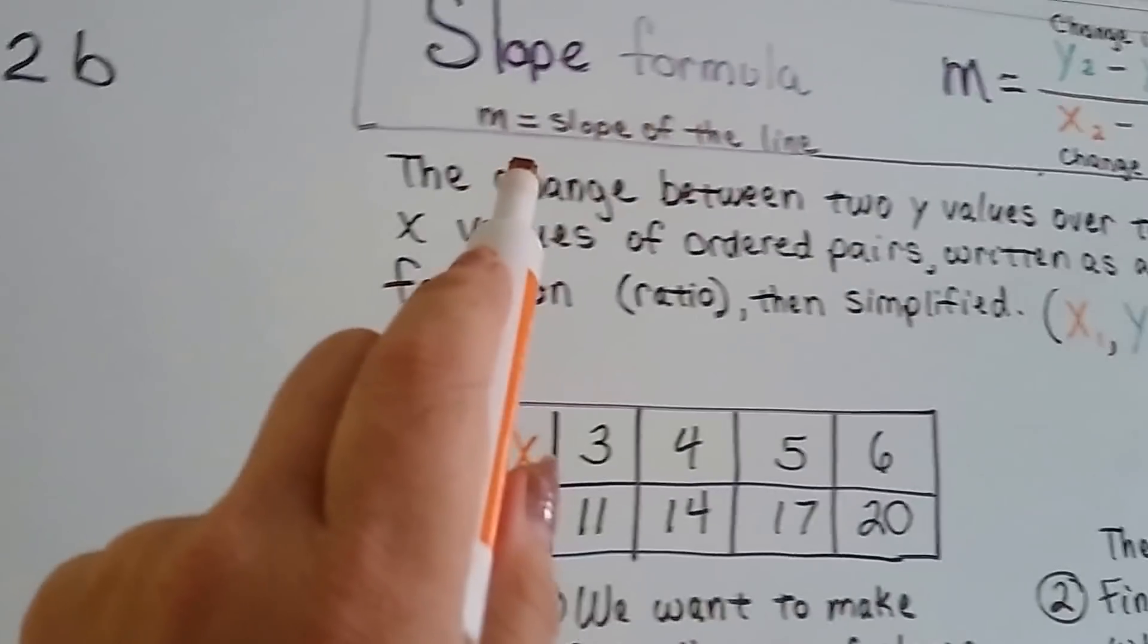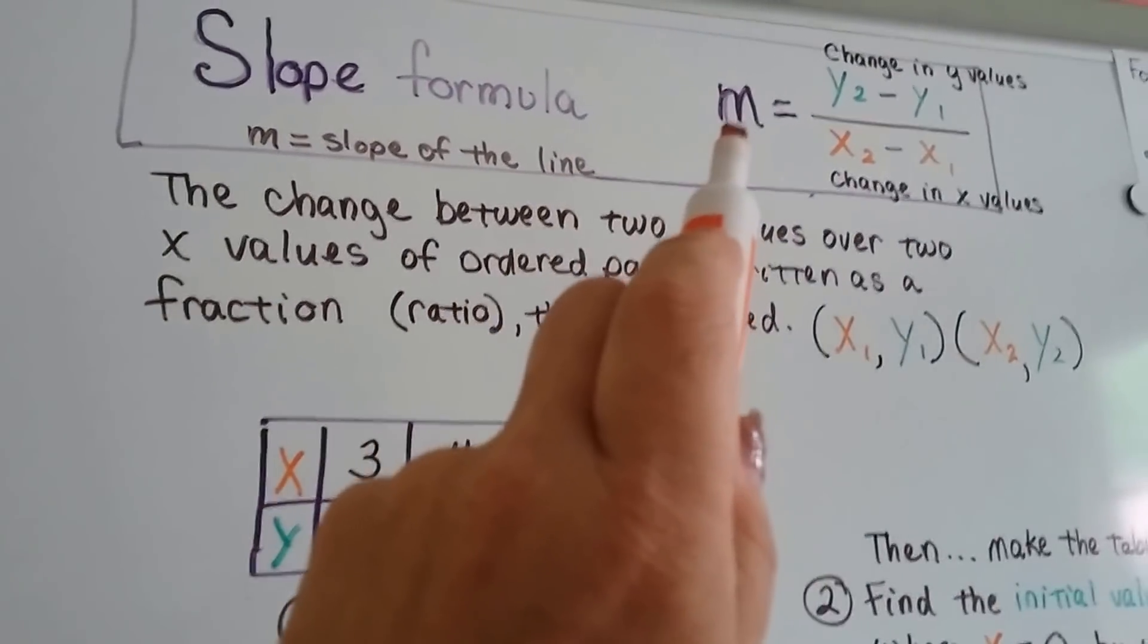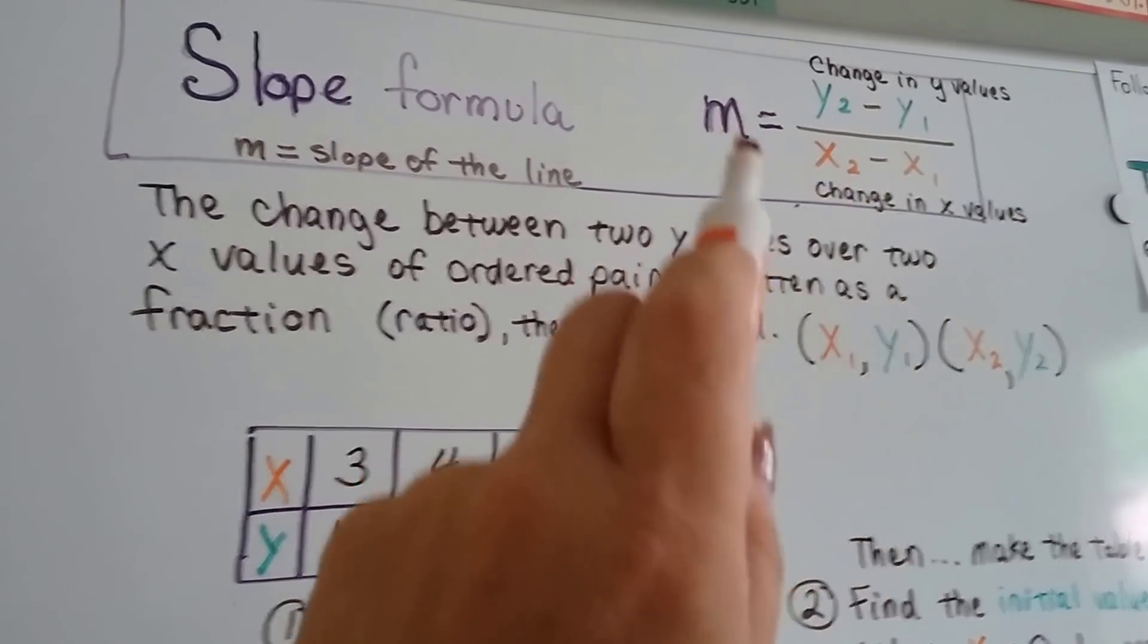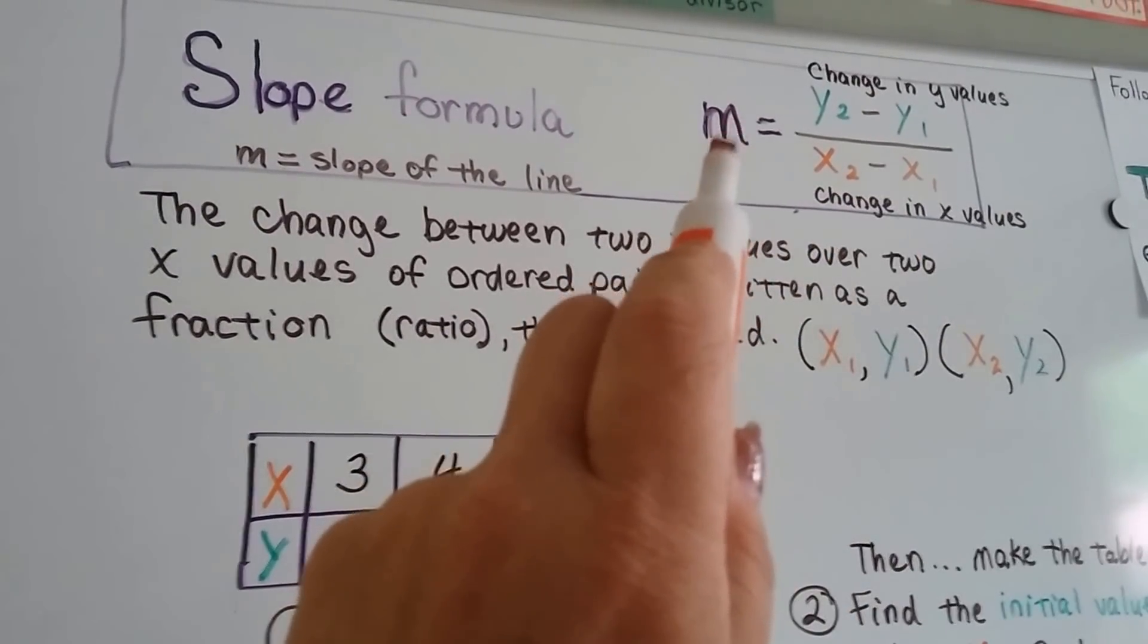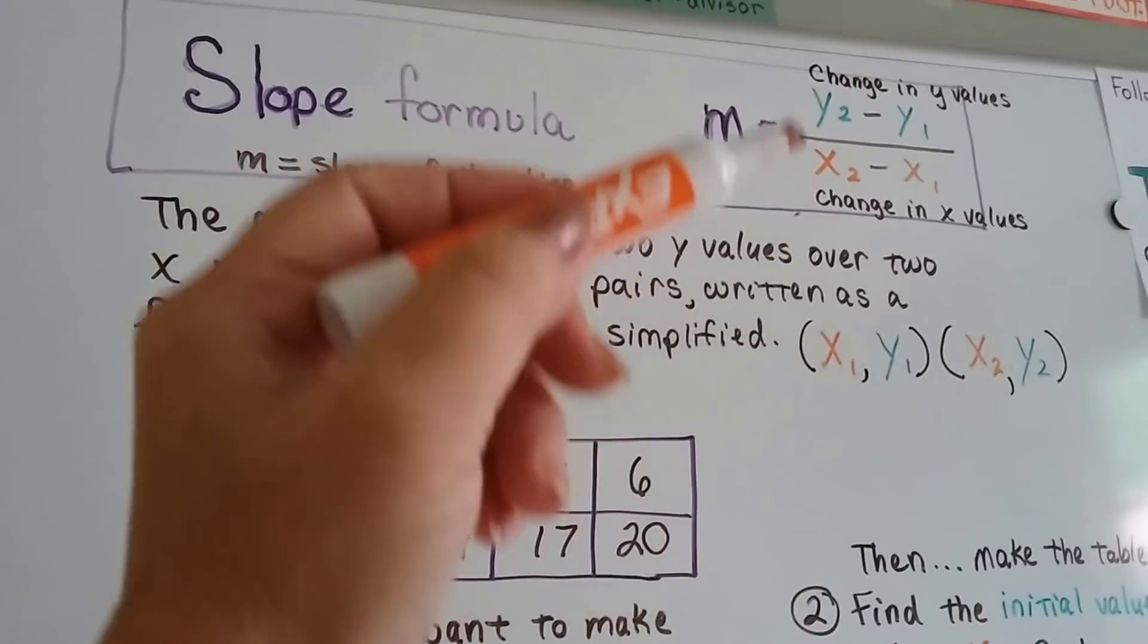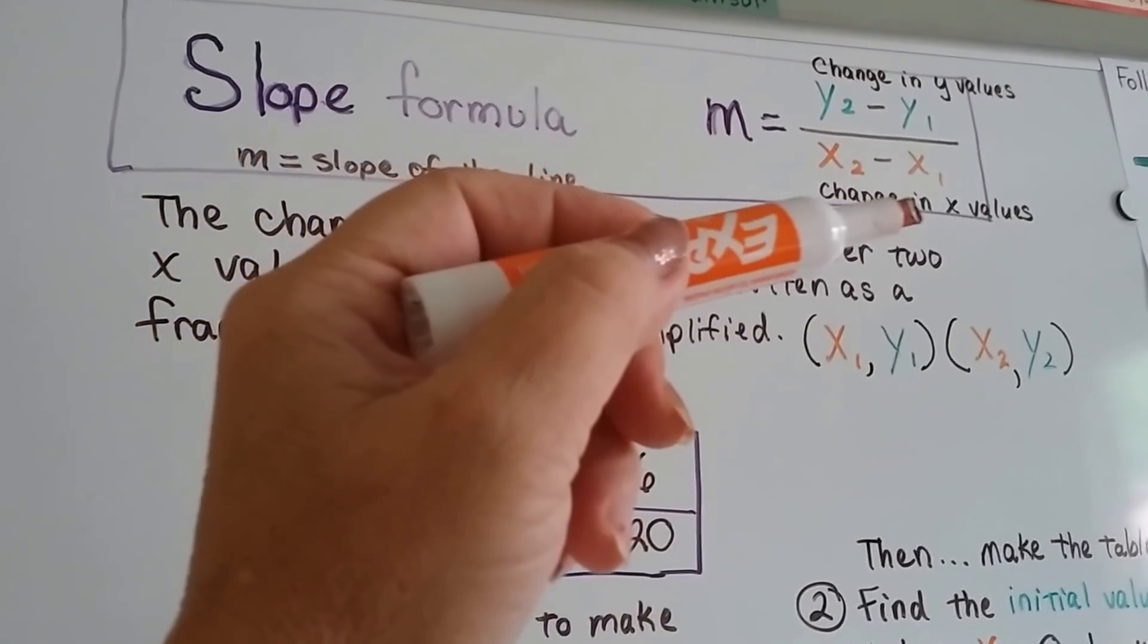It says in the slope formula, m, that's the slope of the line. When we use the slope formula, that's what we're trying to find. m stands for the slope of the line. And we do the change in y values over the change in x values like we've done in the last couple of videos.